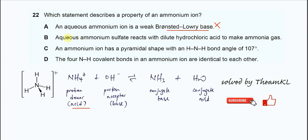Option B: Aqueous ammonium sulfate reacts with dilute HCl to make ammonia gas. Let's use back the same equation. Ammonium will form ammonia gas when it reacts with hydroxide, not HCl. So therefore this statement is also wrong.